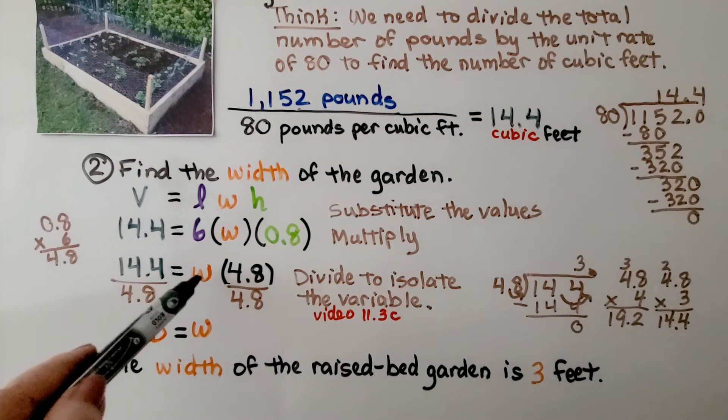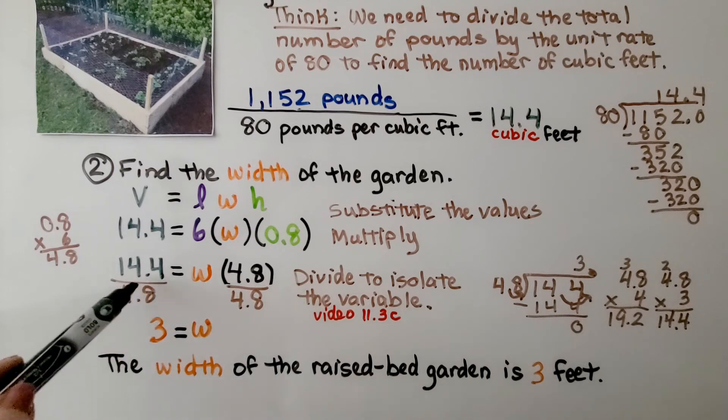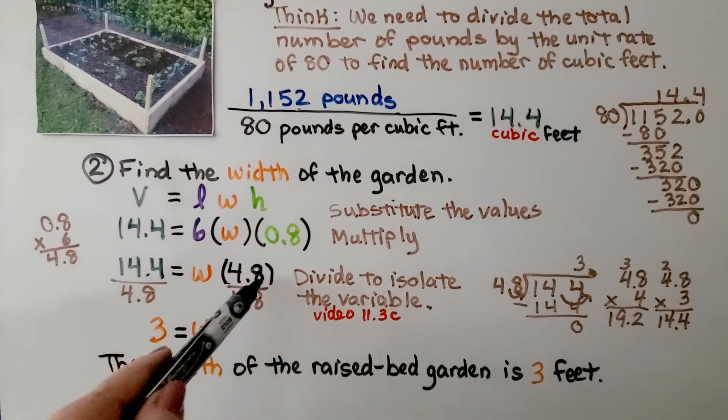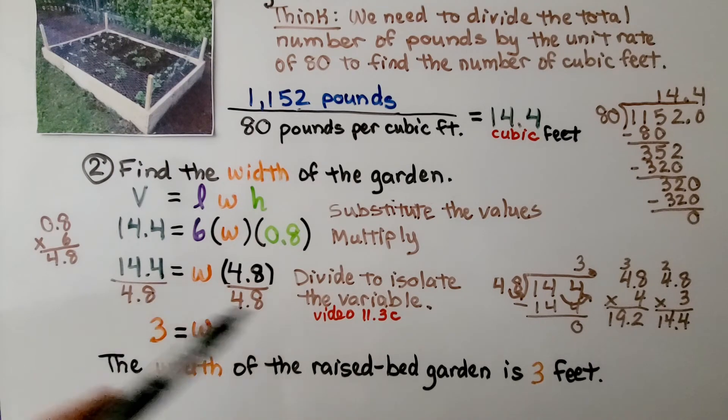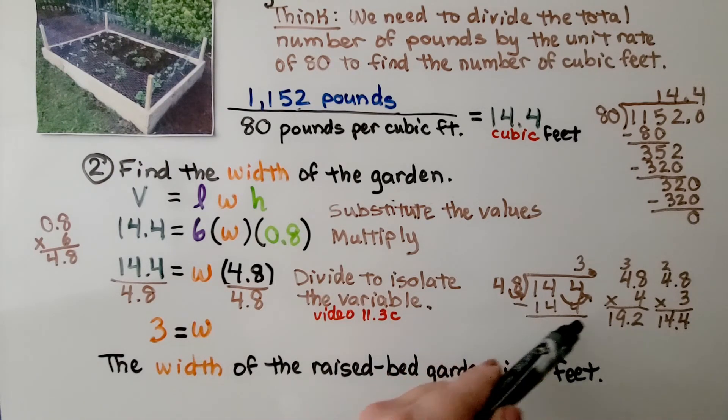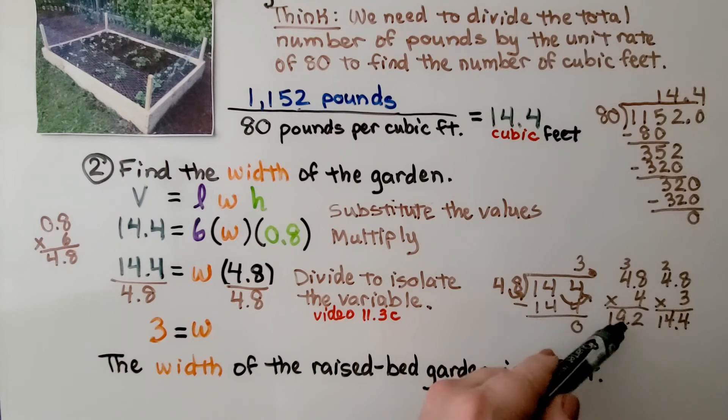To isolate this W, this width, to one side of the equal sign, we divide both sides by that 4.8. And we can do 14.4 divided by 4.8 and do long division. Or we can try multiplying as an inverse.